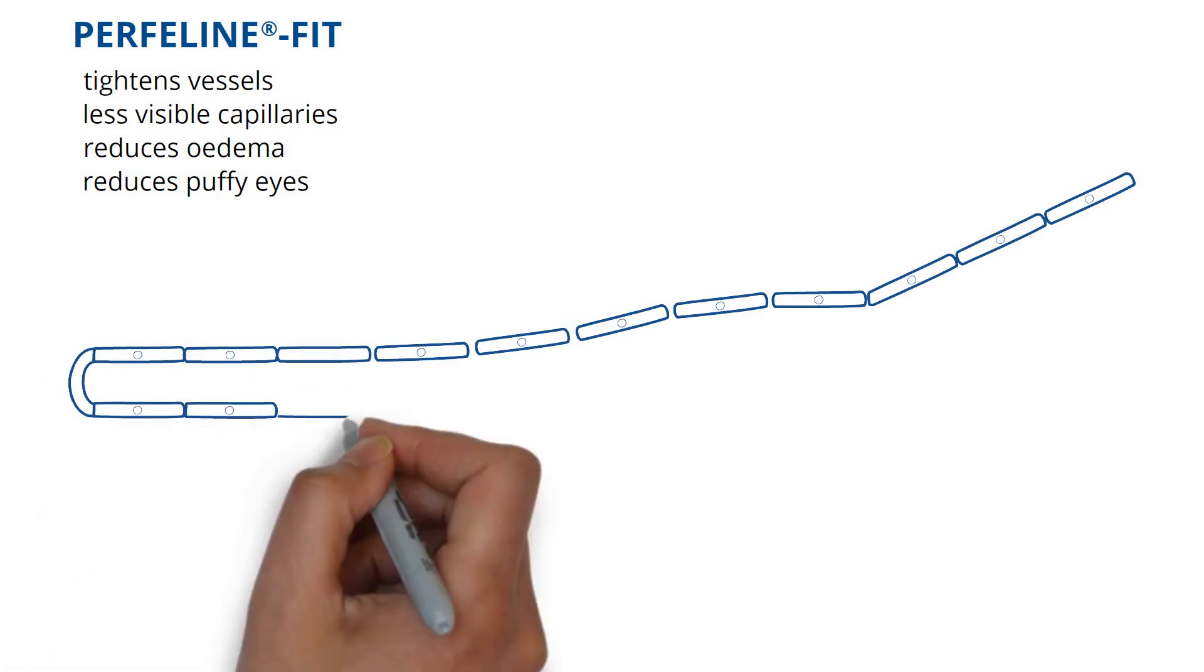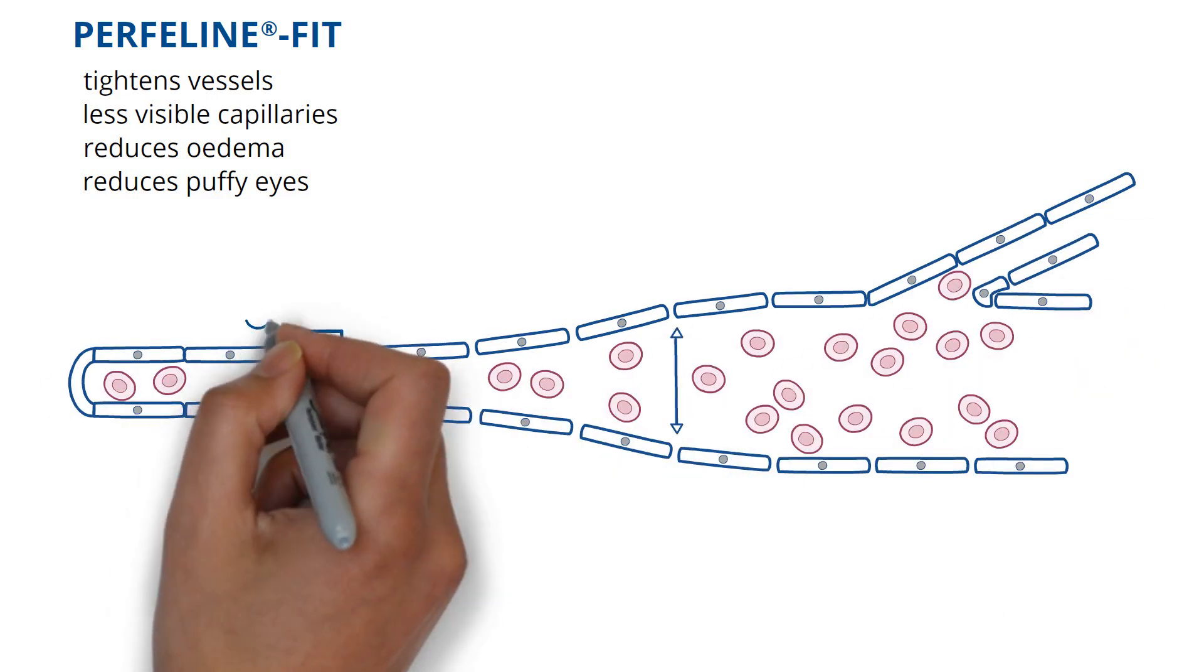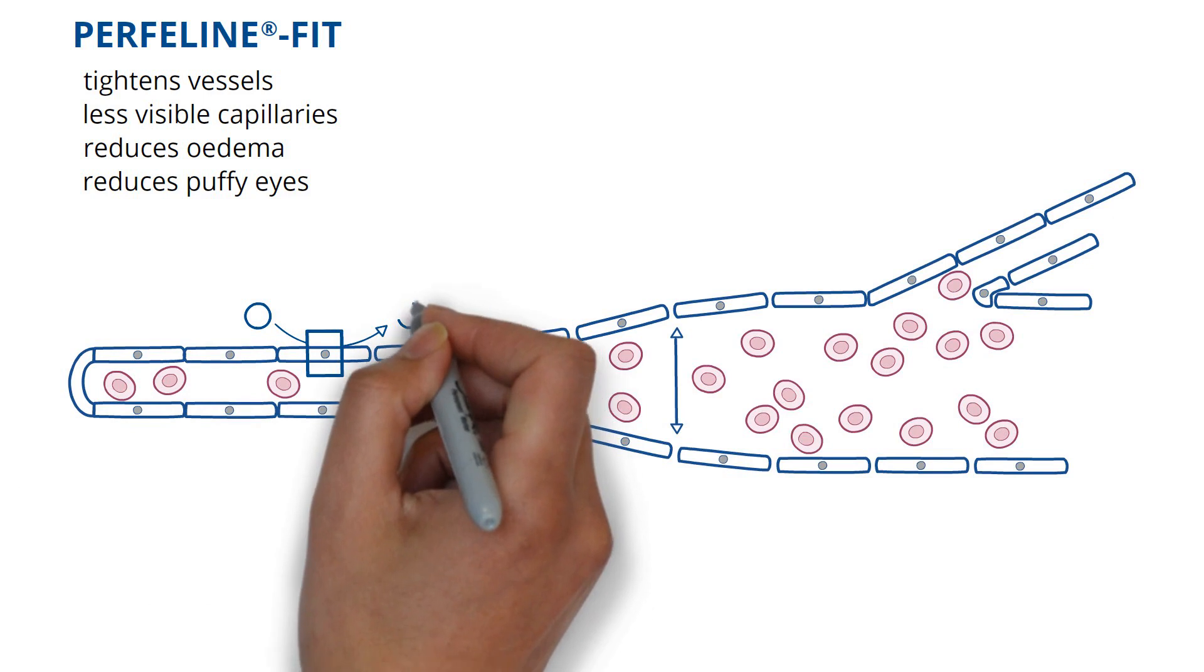It does so by inhibiting nitric oxide synthase, the key enzyme when we talk about vascular dynamics.